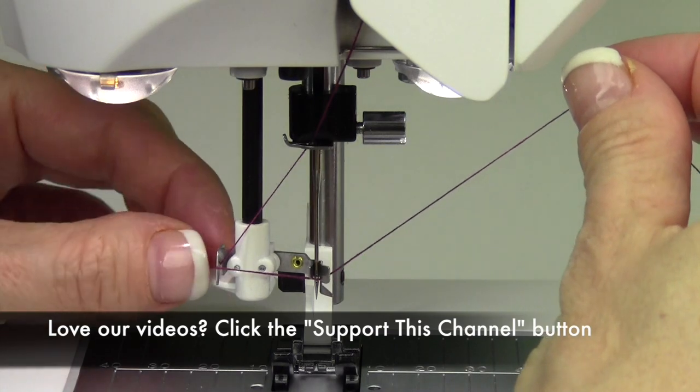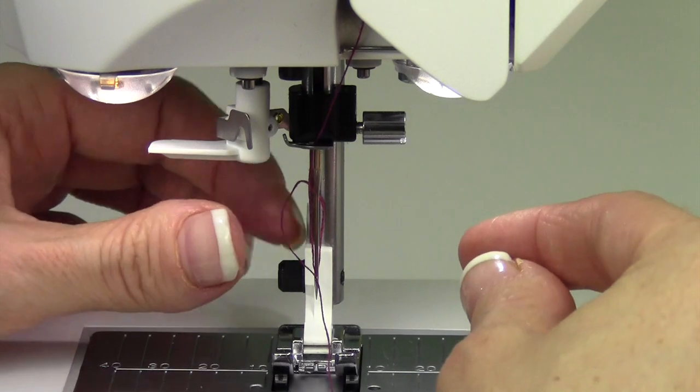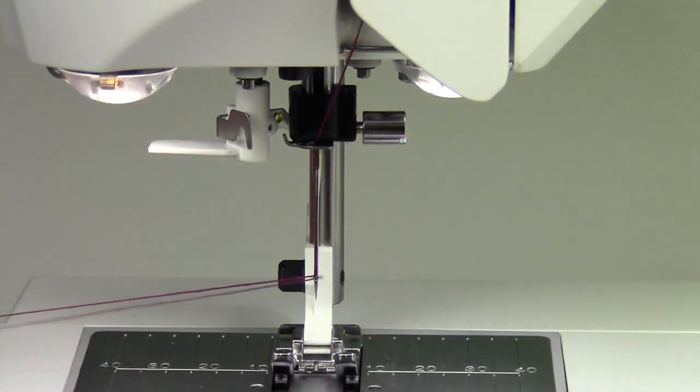As you rotate this away from the needle, notice I let go of my thread. If you keep holding it, it won't pull the little loop through. Then there's a loop. You pull right through the needle.